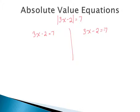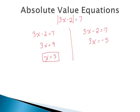At this point, we just want to solve both equations for x. On the left-hand side, 3x minus 2 equals 7. Moving the 2 over, we have 3x equals 9. Dividing out the 3, we get x equals 3. On the right-hand side, 3x minus 2 equals negative 7. Moving the 2 over, 3x equals negative 5. Dividing both sides by 3, we're left with x equals negative 5 thirds.